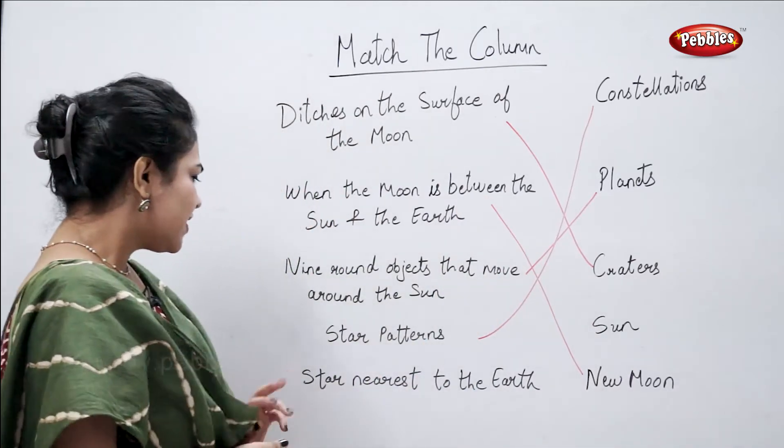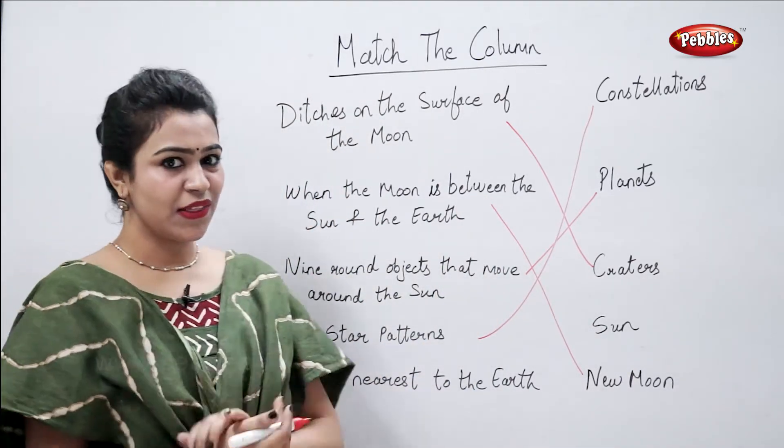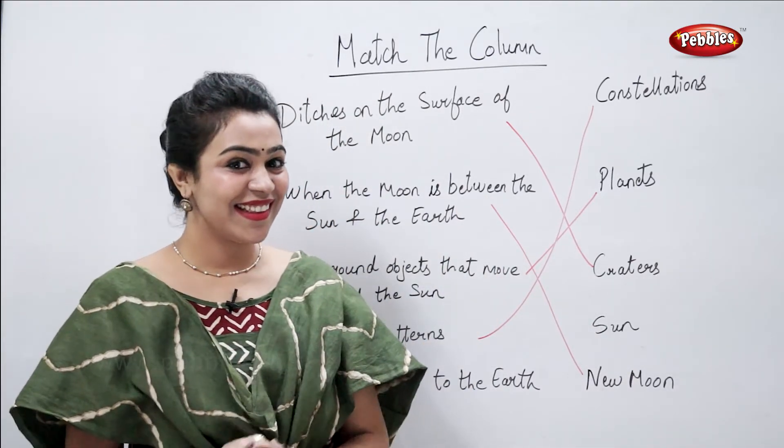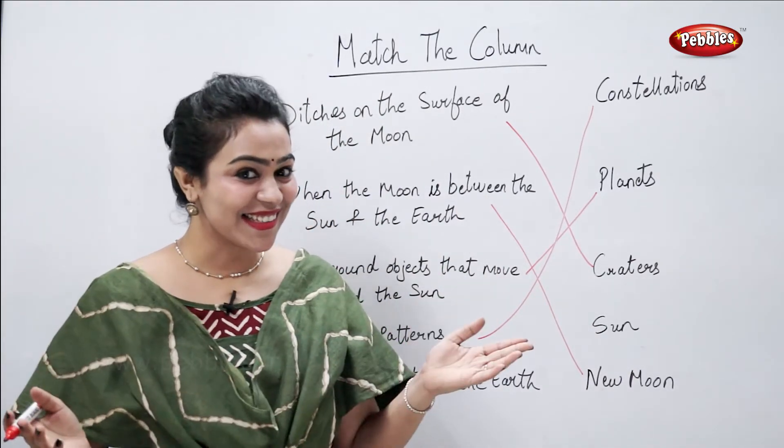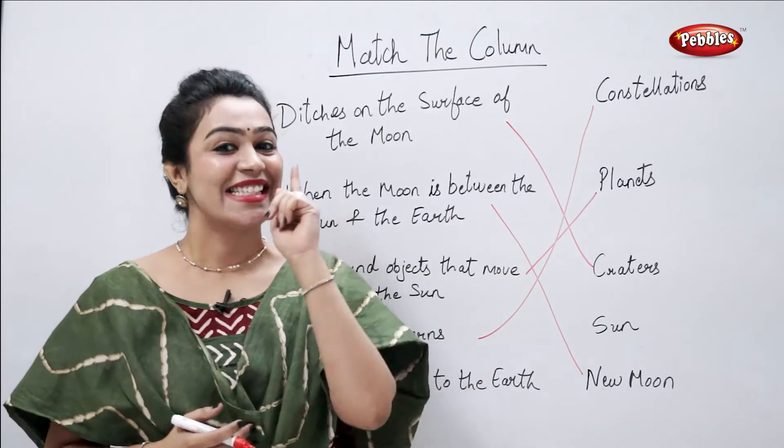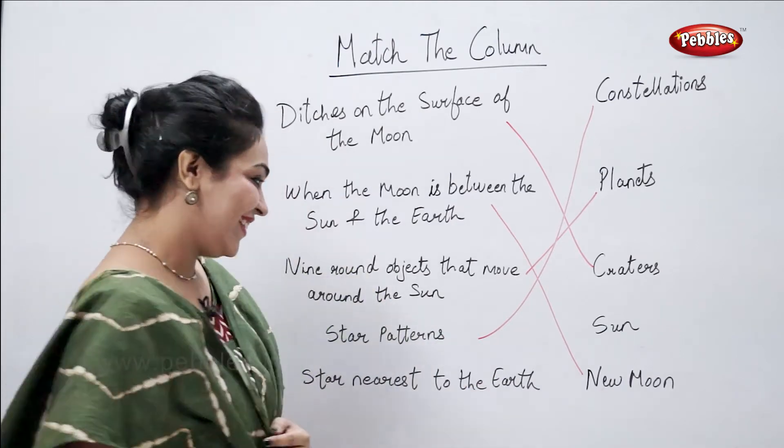Star nearest to the earth — the easiest one. Sun.